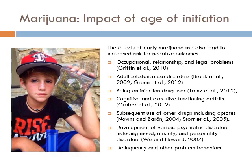Early marijuana use — again before age 14 — also leads to increased risk for negative outcomes, including occupational, relationship, and legal problems; adult substance use disorders; being an injection drug user; cognitive and executive functioning deficits; subsequent use of other drugs including opiates; development of mood, anxiety, and personality disorders; and delinquency and other problem behaviors.